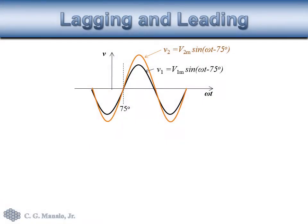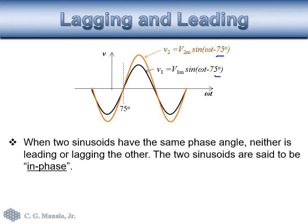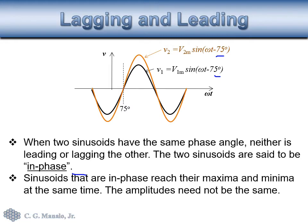Another scenario is if they have the same phase angle. In this case neither one is leading or lagging the other — the two sinusoids are said to be in phase. Sinusoids that are in phase reach their maxima and minima at the same time, and their amplitudes need not be equal.